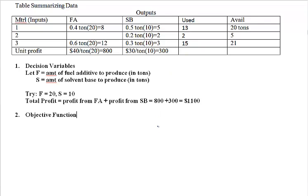So now we're ready to go on to the second step: come up with the objective function. Whatever you're trying to maximize or minimize, write that in terms of your decision variables F and S. Here we want to write down the total profit — that's profit from fuel additive plus profit from solvent base — which is the unit profit $40 times F plus the unit profit $30 times S. So the objective function is: maximize 40F plus 30S.